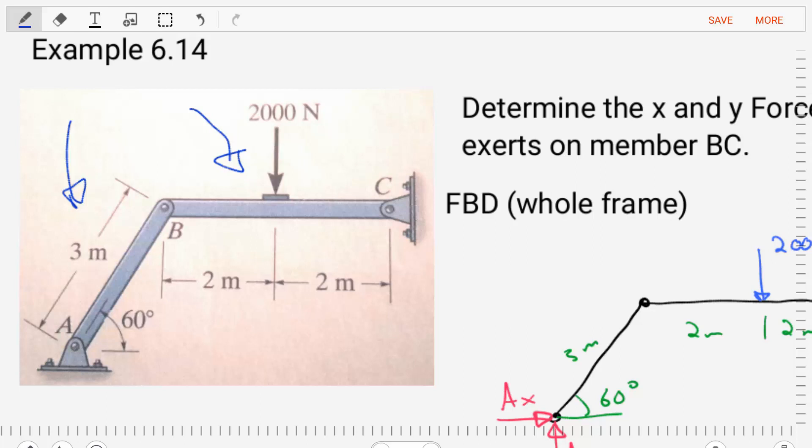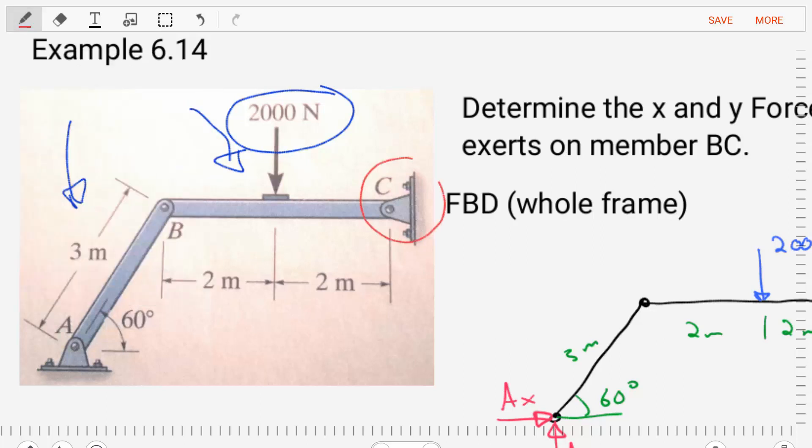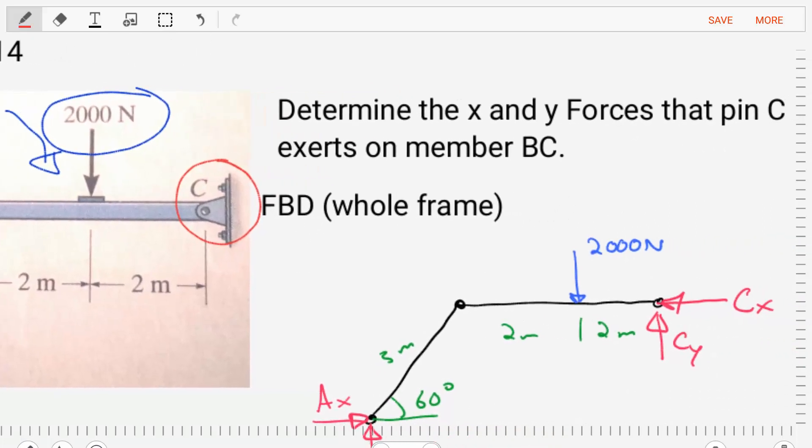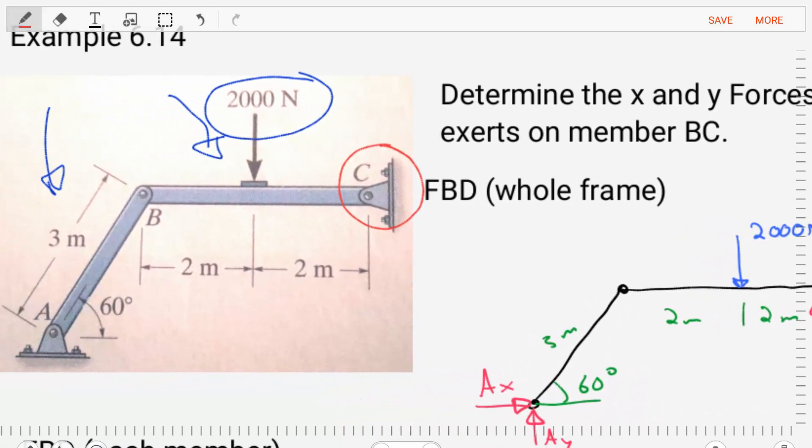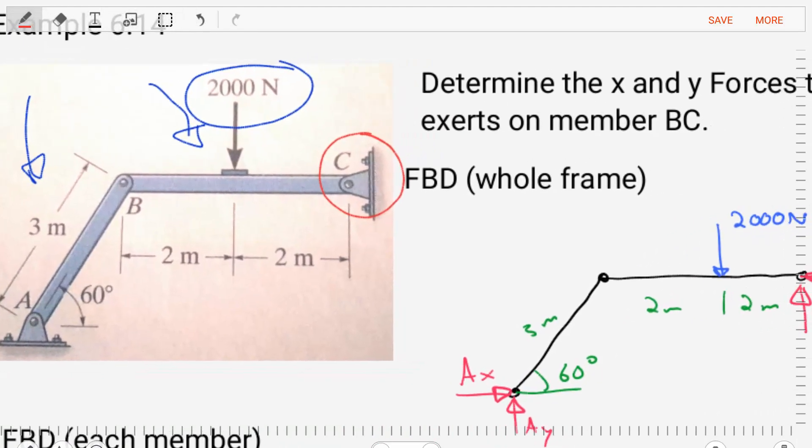Member BC has a concentrated force of 2,000 Newtons applied to it, and it has a pin connection at C. We're asked to determine the X and Y forces that the pin connection exerts on the member. We want to find the reaction forces. We want to replace this pin with the reactions and find those forces.